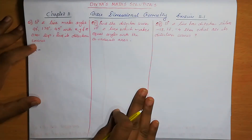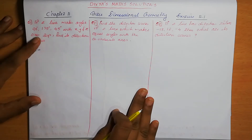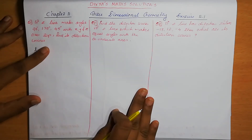Question number 1: if a line makes angles 90 degrees, 135 degrees, 45 degrees with the x, y, z axis respectively, find the direction cosines.